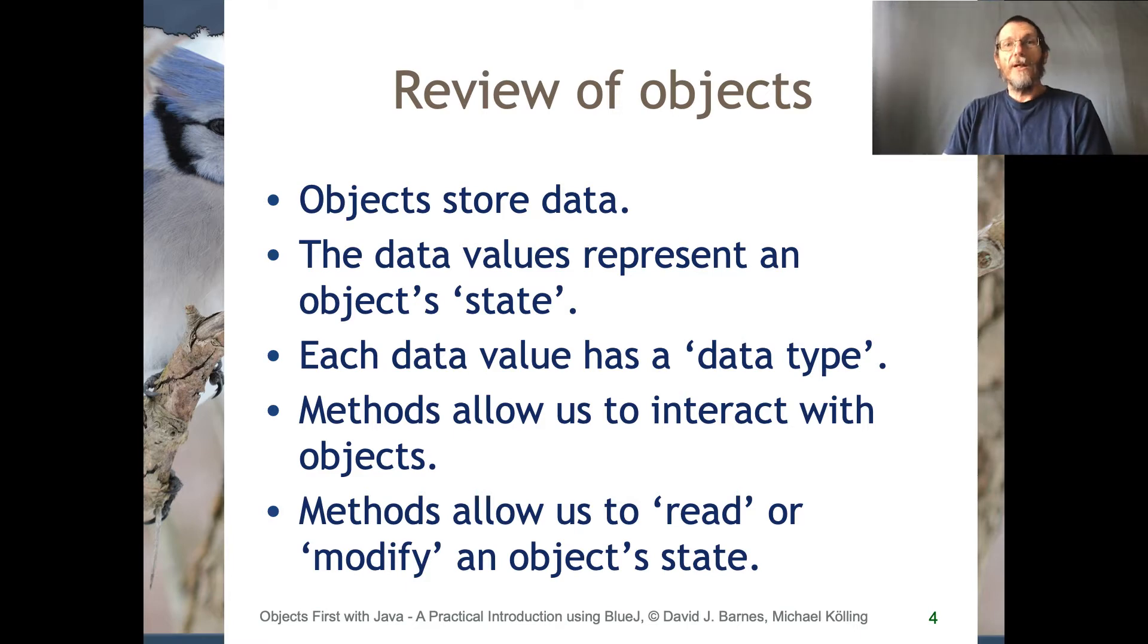At its most basic level an object is simply a few pieces of the computer's memory that stores some data values, and we say that those values represent the object's state.